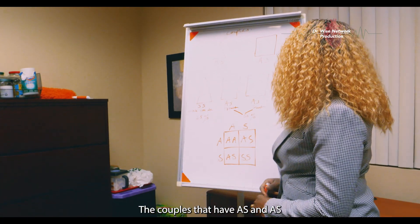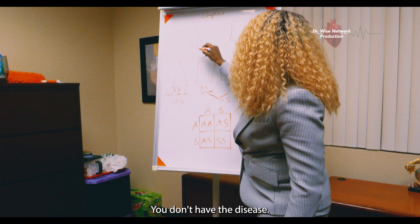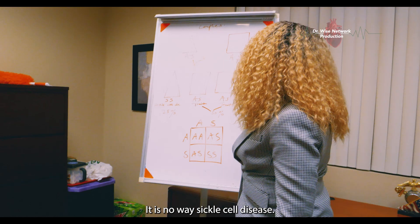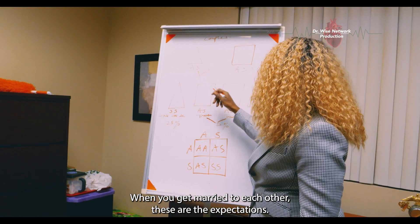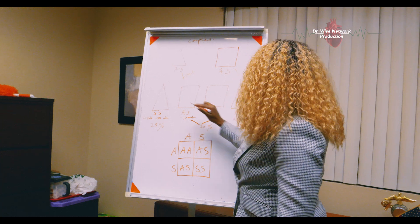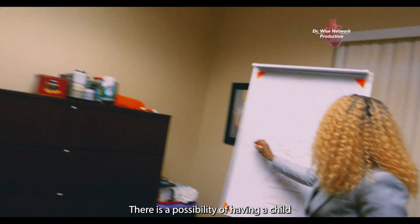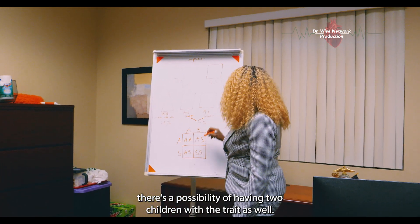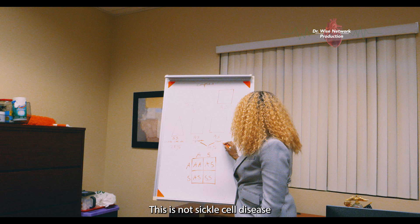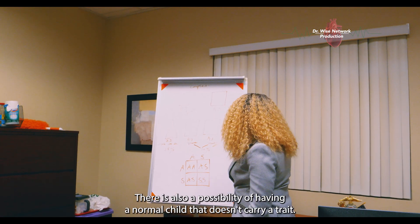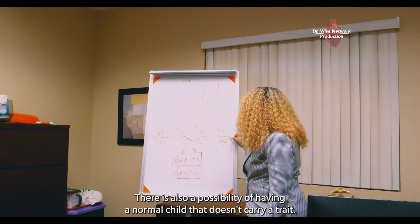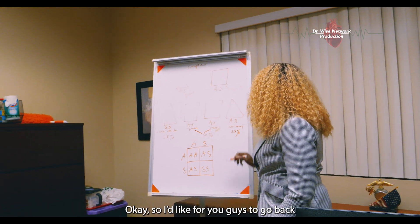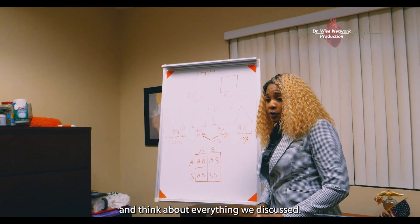Couples who are both AS only carry the trait — you don't have the disease. When you get married to each other, there is a 25% chance of having a child with sickle cell disease, a 50% chance of having children with sickle cell trait, and a 25% chance of having a normal child that carries neither the trait nor the disease. I would like for you to go back and think about everything we discussed.